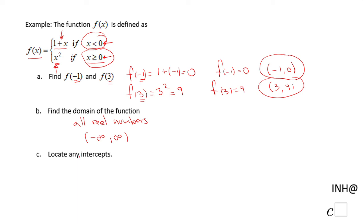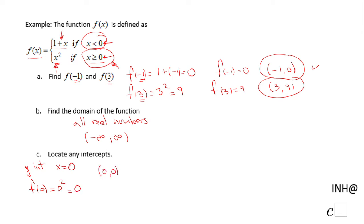For intercepts, let's start with the y-intercept. Y-intercepts occur when x equals 0. Since x equals 0, we use the second piece of the piecewise function and evaluate f of 0, which gives us 0 squared, which is 0. So the y-intercept is at (0, 0), which is also an x-intercept.